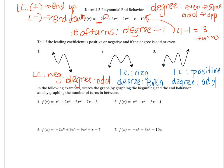Let's move on to number 4. It says: sketch the graph by graphing the beginning and end behavior and the number of turns in between. Before we start, we'll plan things out. Is the function in descending order? Yes — it goes x to the fourth, x to the third, x squared, x, and constant. Now look at the leading coefficient — is it positive or negative? In this case it is positive. The degree is 4, which means it's even, so the arrows are going to be going in the same direction.